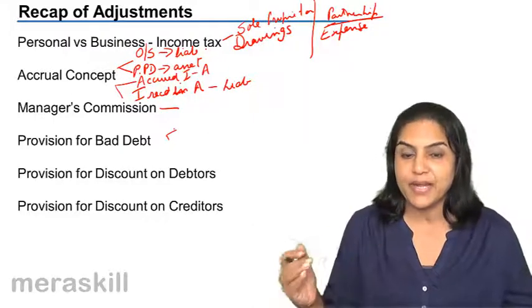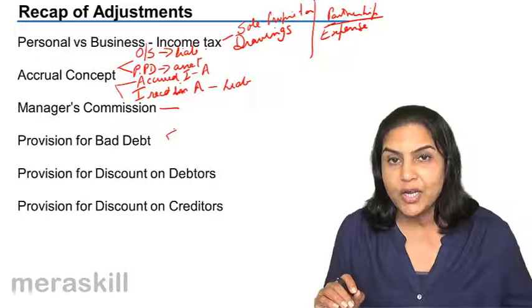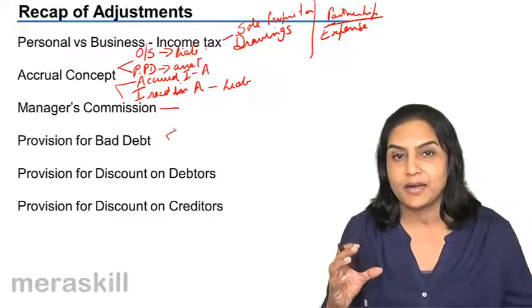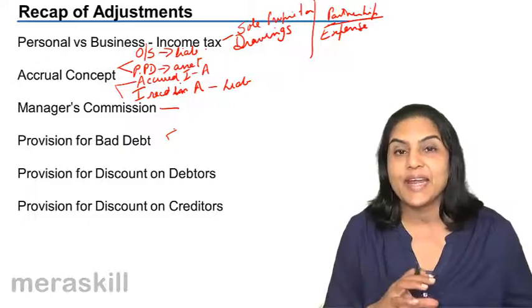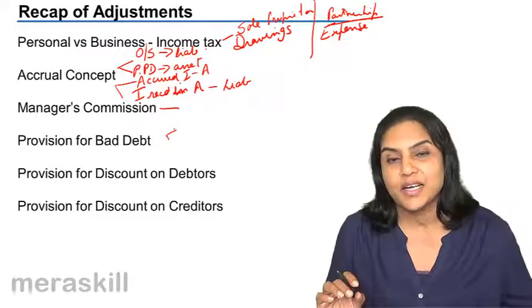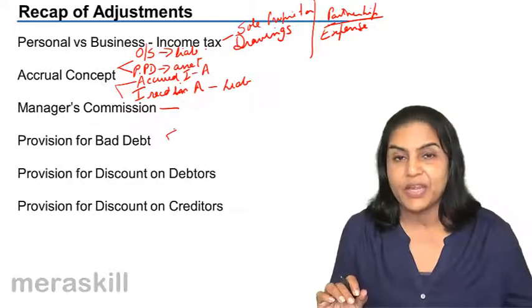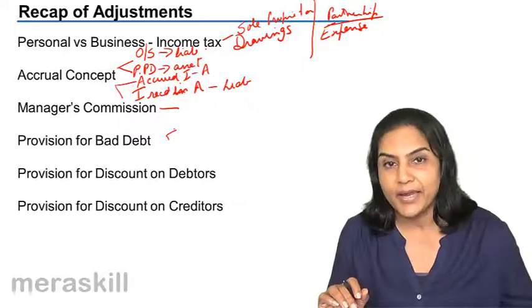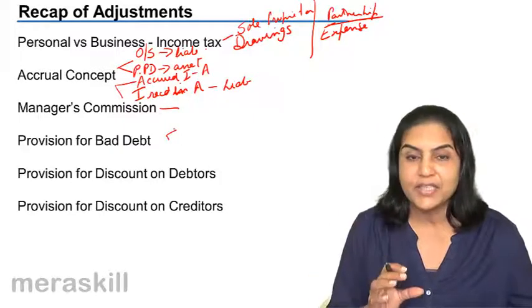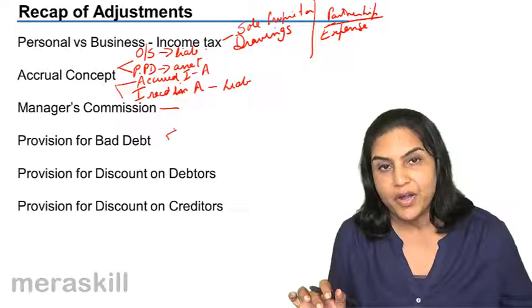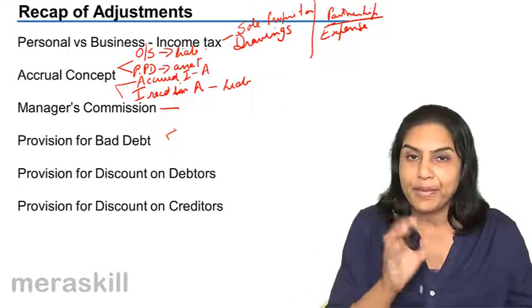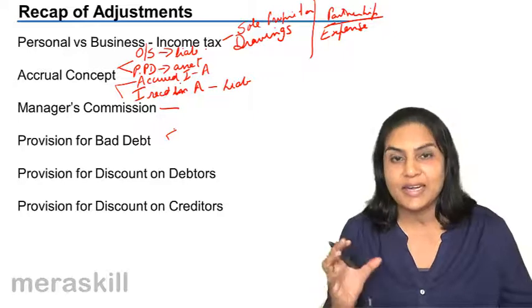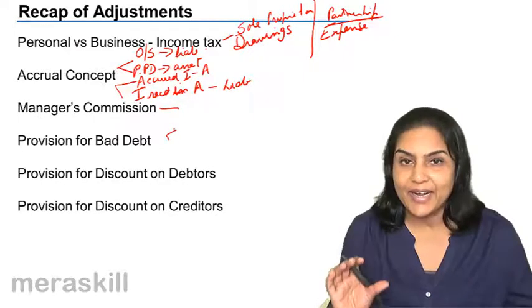When we expect these bad debts to come in the future, expect any debt to be doubtful, then we create a provision for this doubtful debt. We looked at accounting entries with respect to bad debts, with respect to the provision for bad debts.